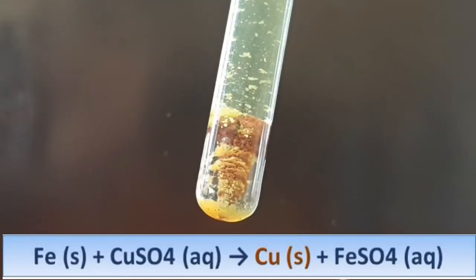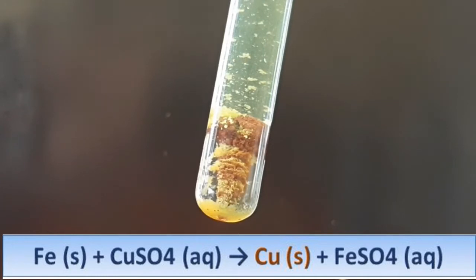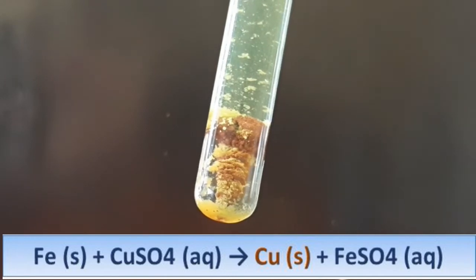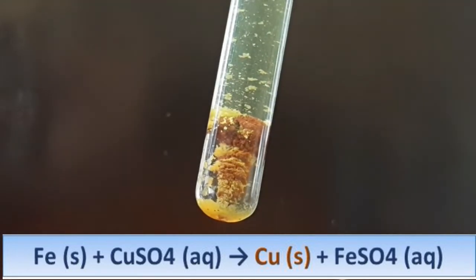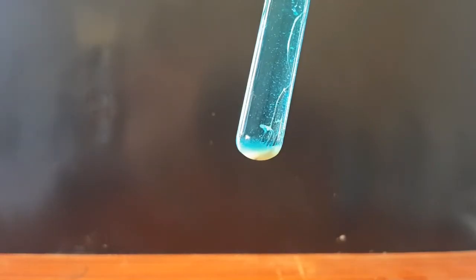Look at the iron nail, it's completely surrounded by copper and the solution has turned a shade pale green. Iron reacts with copper sulfate to produce an aqueous iron sulfate and copper which is deposited around the iron nail.